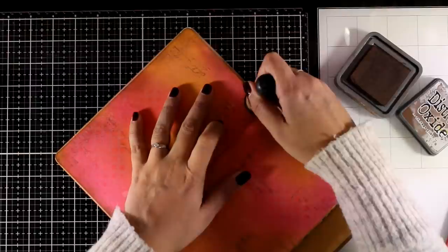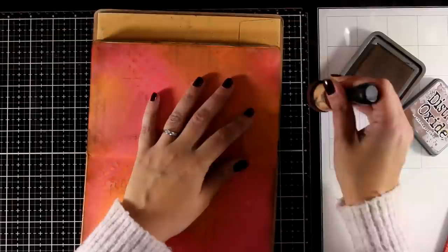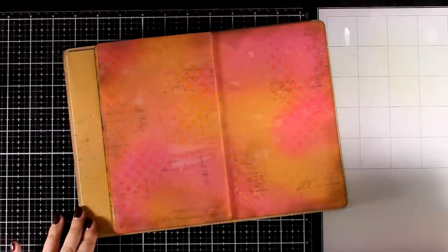Using the same ink pad and a blending tool I'm adding some shading only at the edges just to darken them up a little bit and that helps the colors to look brighter at the center.